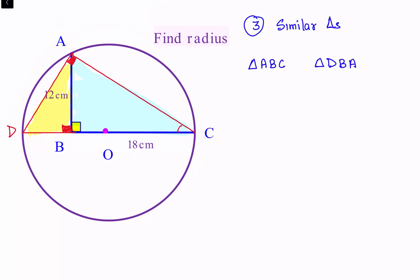If this angle is alpha and this angle is beta, then alpha plus beta equals 90 degrees — that's in the blue triangle. In the yellow triangle this angle is also alpha and this angle is beta. Since the angles are the same for both triangles, we can say both triangles are similar to each other. If the triangles are similar, then the ratio of their sides are equal.